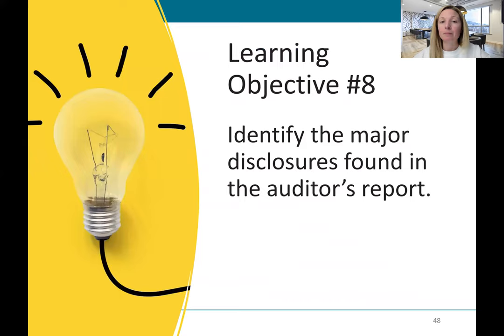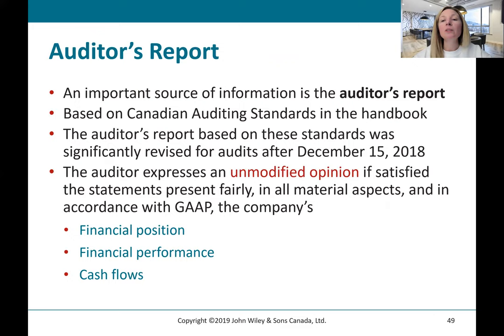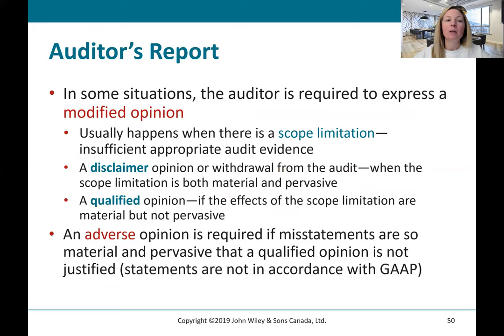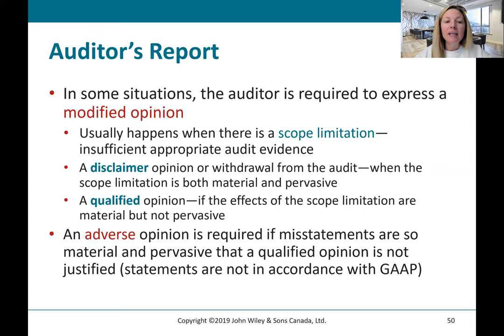Learning objective number eight: identify the major disclosures found in the auditor's report. The auditor's report states whether there is an unmodified opinion — when the auditor is satisfied that the statements present fairly in all material respects, in accordance with GAAP, the company's financial position, income statement, balance sheet, and cash flows. In some situations the auditor must express a modified opinion, such as when there is a scope limitation due to insufficient information. A disclaimer opinion or withdrawal from the audit occurs when the scope limitation is both material and pervasive. An adverse opinion is required if misstatements are so material and pervasive that a qualified opinion is not justified.